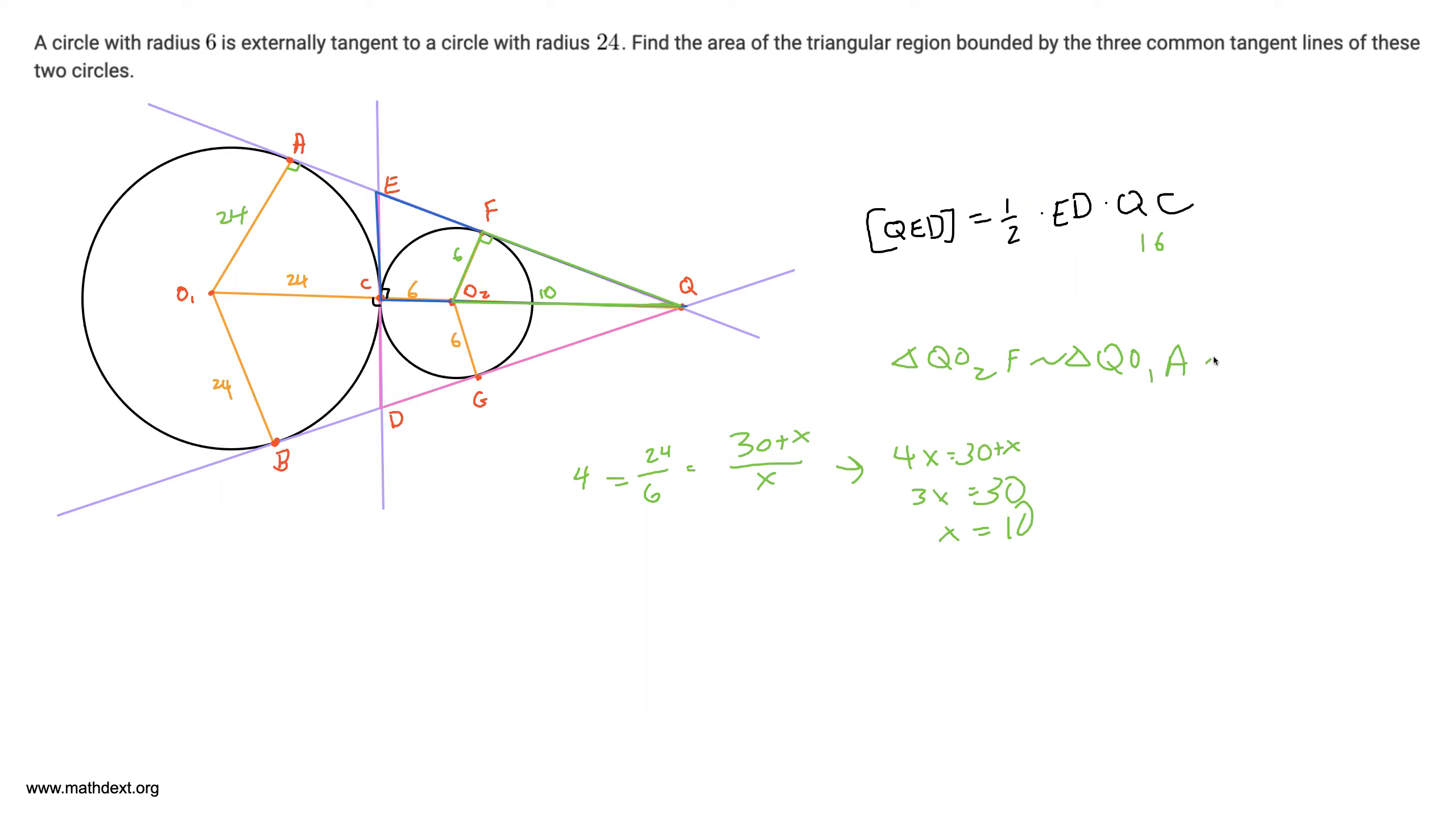So you can add another triangle, QEC, to this similarity, big similarity. And because of this, well, take a look. Triangle QO2F is a 6, 8, 10 right triangle, right? Because 6, 8, and 10 satisfy the Pythagorean theorem, 6 squared plus 8 squared is equal to 10 squared.